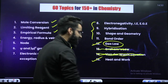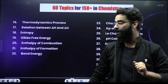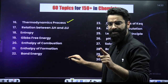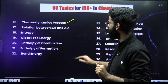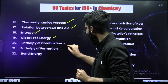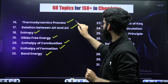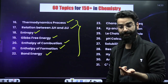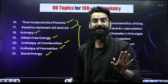In the Thermodynamics part, heat and work is the most important. Apart from heat and work, different types of thermodynamic processes — isothermal, isochoric, adiabatic, etc. Relation between delta H, delta U, entropy, Gibbs free energy, enthalpy of combustion, enthalpy of formation, bond energy. This covers your Thermodynamics and Thermochemistry topics which you cannot leave at all.